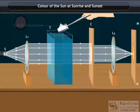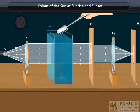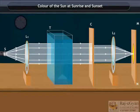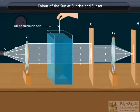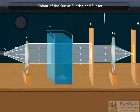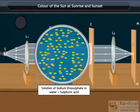Dissolve about 200 grams of sodium thiosulphate (hypo) in about 2 liters of clean water taken in the tank. Add about 1 to 2 milliliters of concentrated sulfuric acid to the water. You will find fine microscopic sulfur particles precipitating in about 2 to 3 minutes.